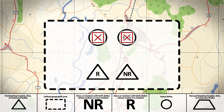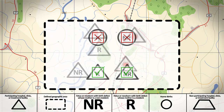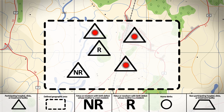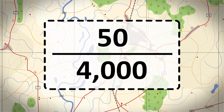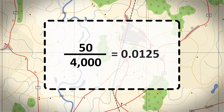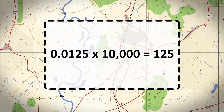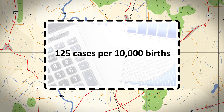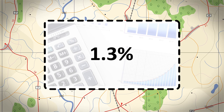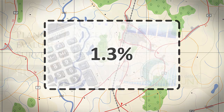Also remember the mother's residency does not affect which births are counted in a hospital-based program. Next, count the total number of deliveries — which would include live births, elective terminations of pregnancy for fetal anomaly, and stillbirths — that occur in participating hospitals within the same period of time. This is the denominator. Last, divide the numerator by the denominator and then multiply the result by 10,000. In this example, the hospital-based prevalence of birth defects is 125 cases per 10,000 births, or 1.3 percent, for a particular time period.